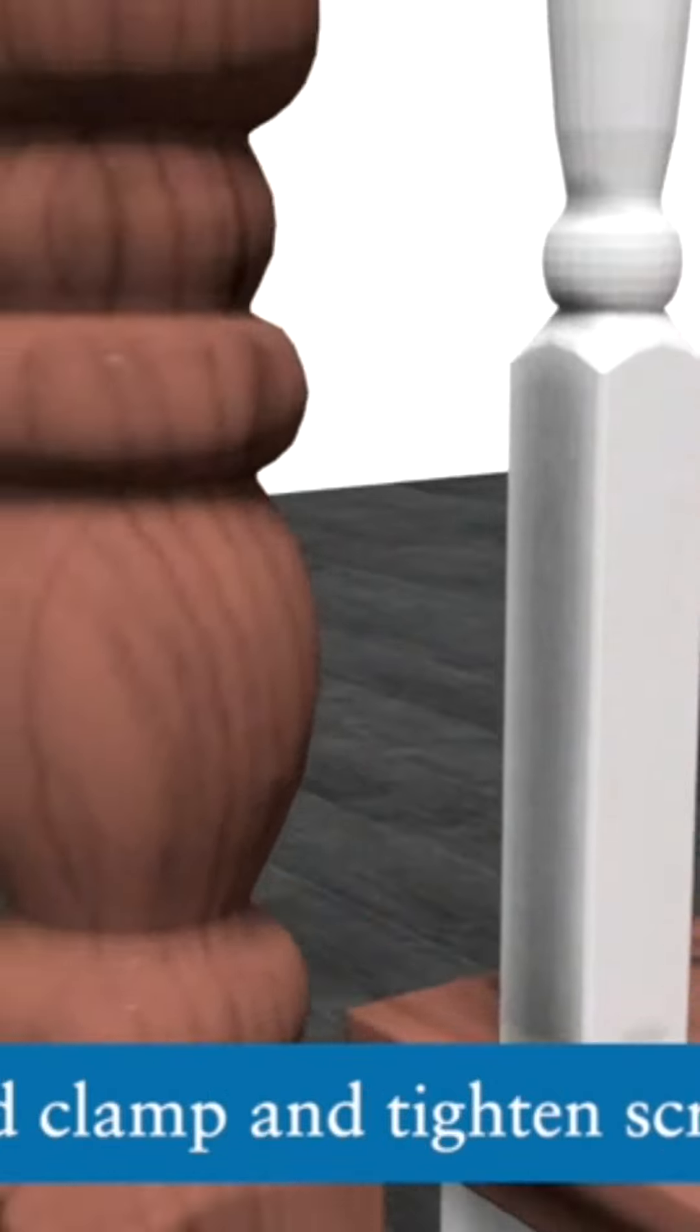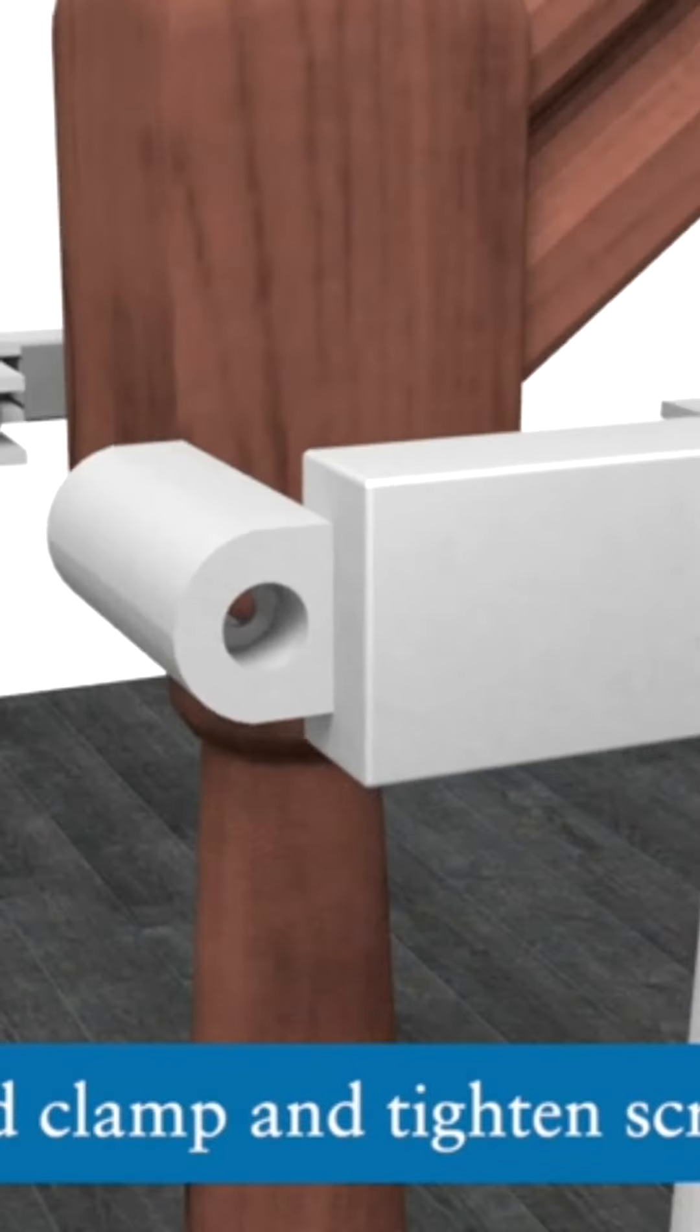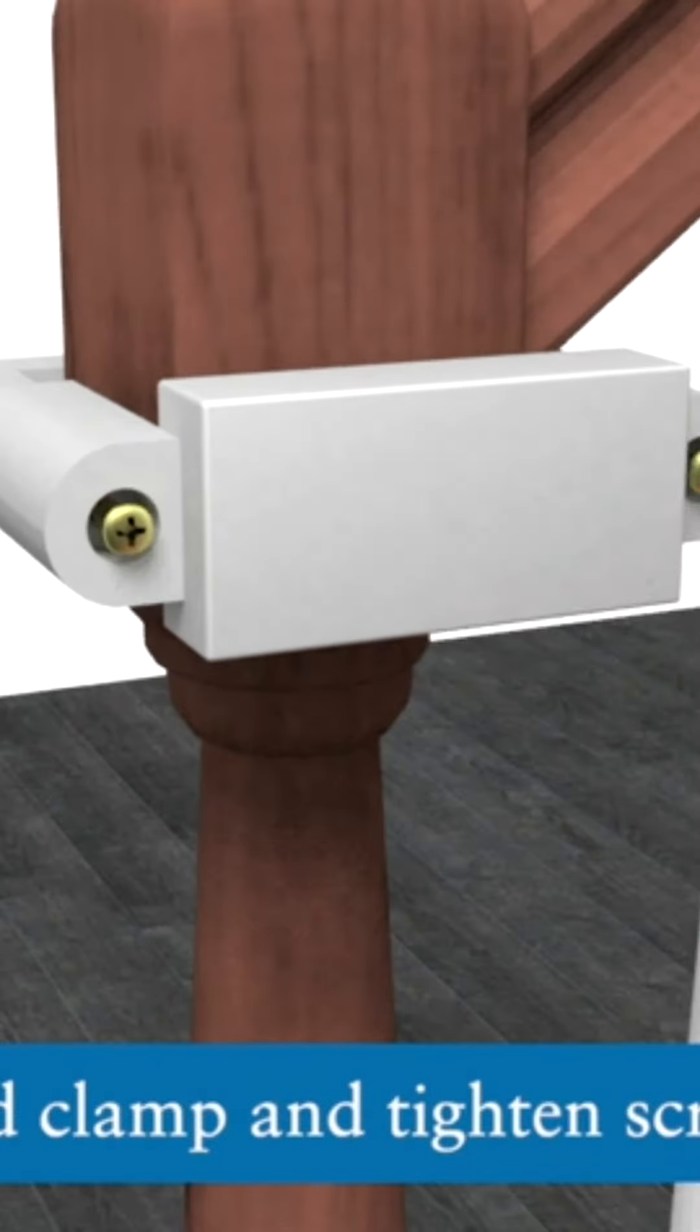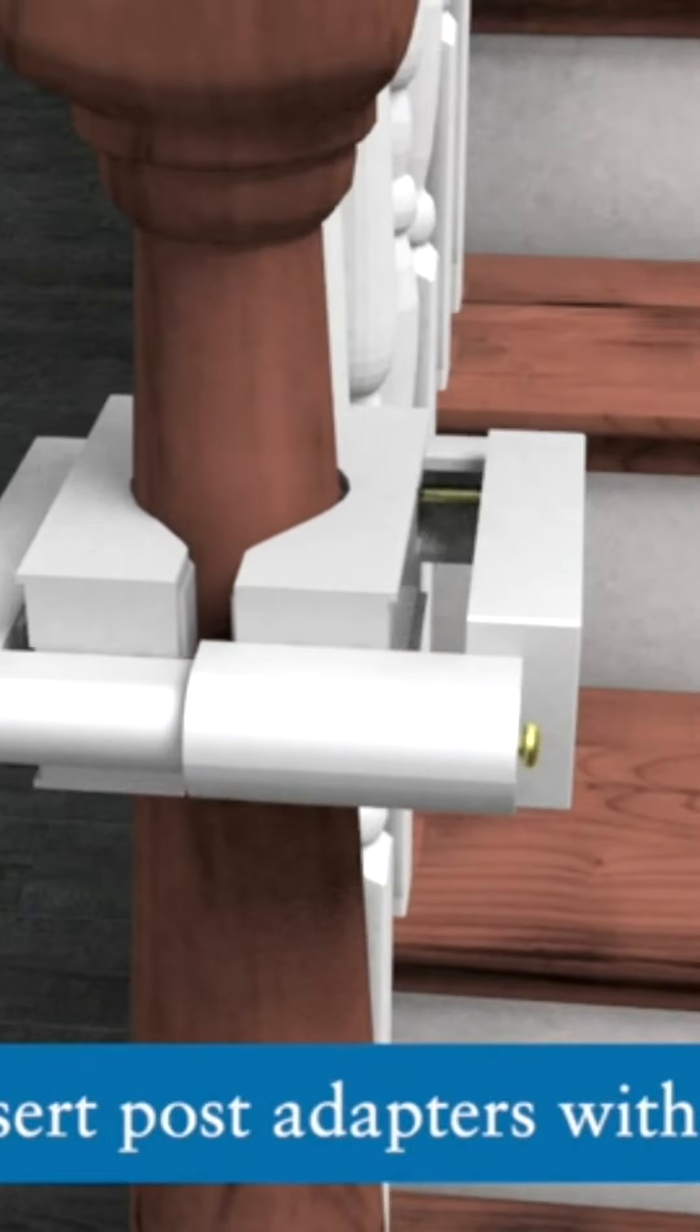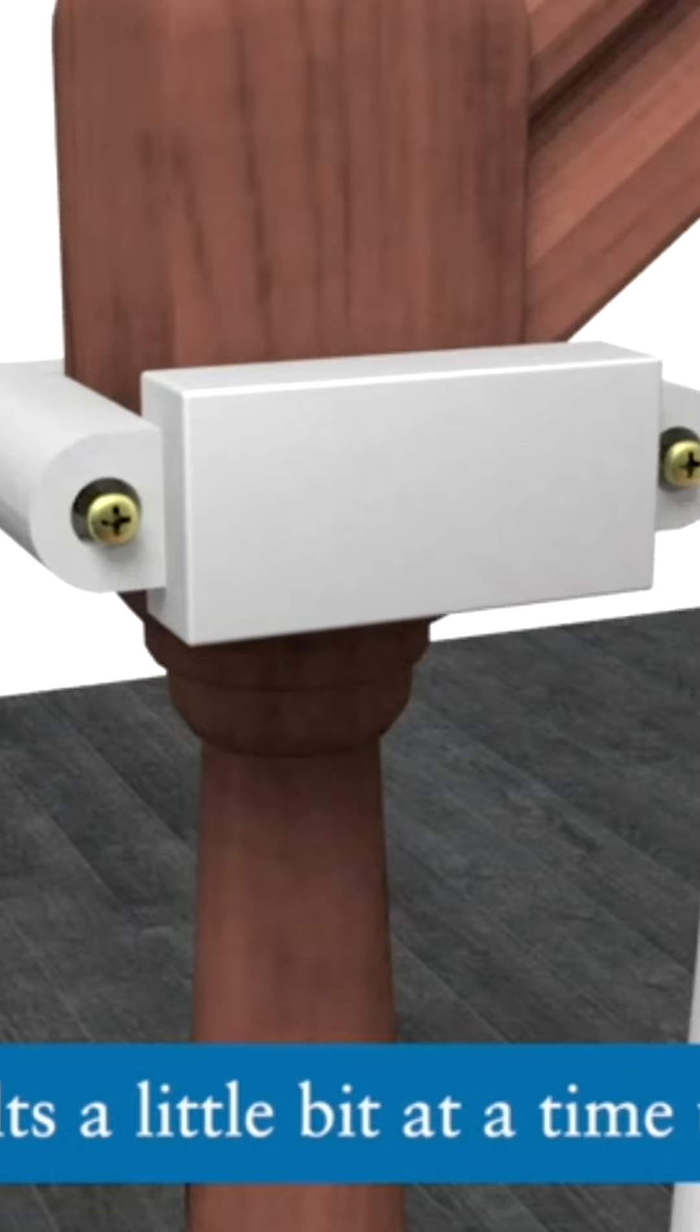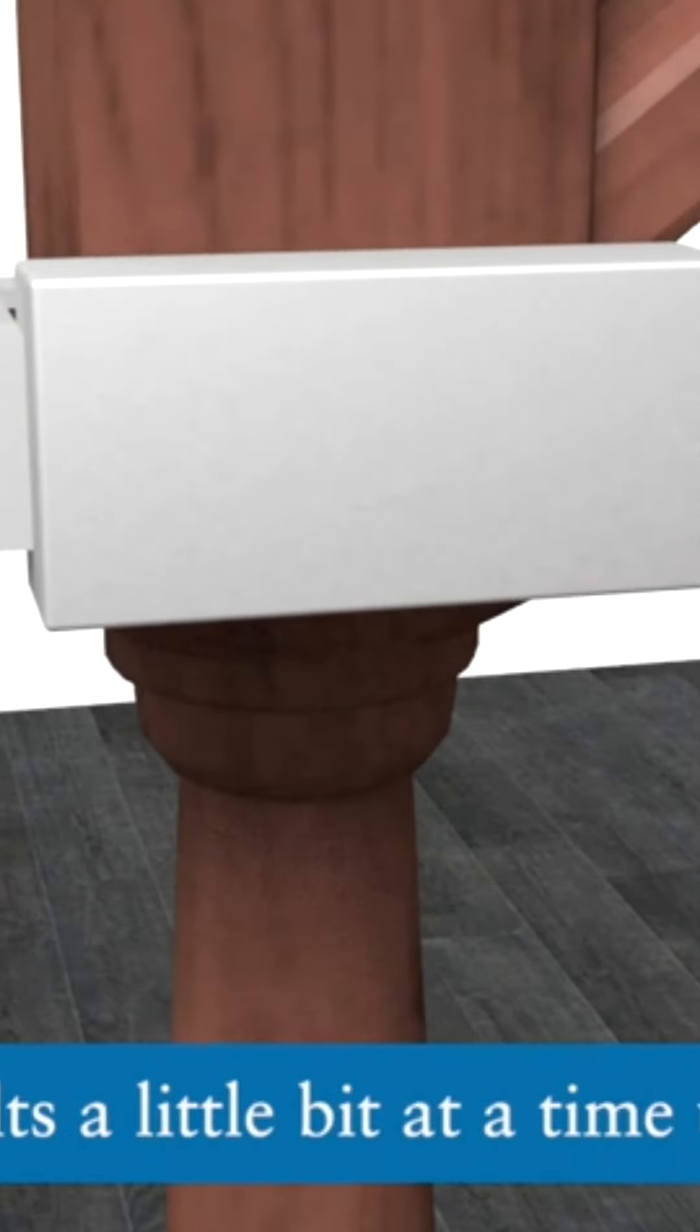Place the second clamp front and back around the post and tighten the screws slightly. For round posts, insert the post adapters into the clamp with the arrows on the inner cushion pointing upward. Tighten each bolt a little bit at a time so both sides are tightened evenly and the clamp is secure.